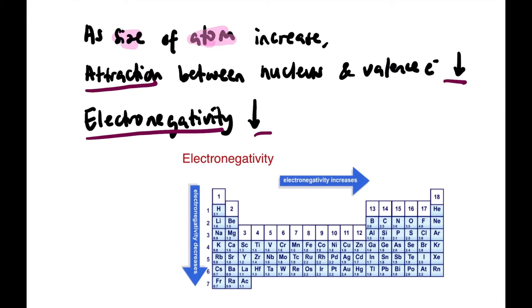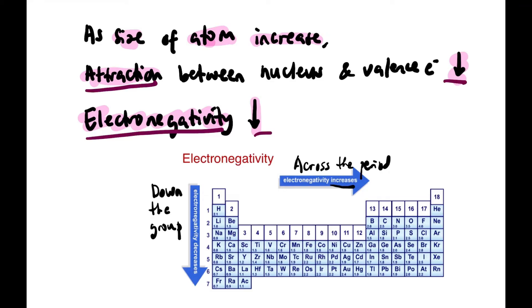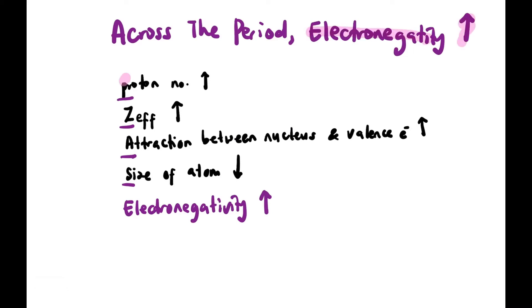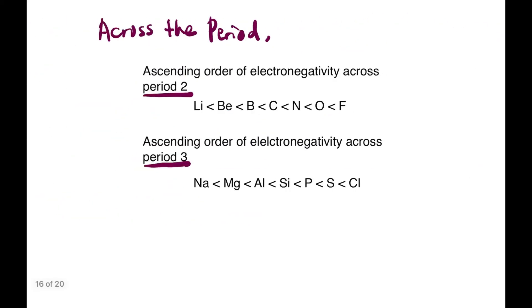As the size of the atom increases, the attraction between nucleus and valence electron becomes weaker, so electronegativity decreases. Conversely, if the size is smaller, attraction is stronger, and electronegativity is higher. That is what happens across the period — electronegativity increases. Down the group, because size increases, electronegativity decreases and attraction becomes weaker. Down the group: number of shells increase, shielding effect increases, attraction weaker, size larger, so electronegativity decreases. Across the period: proton number increases, Zeff increases, attraction stronger, size smaller, so electronegativity increases. Whether period 2 or period 3, electronegativity increases across the period — from Li to F in period 2, and from Na to Cl in period 3.